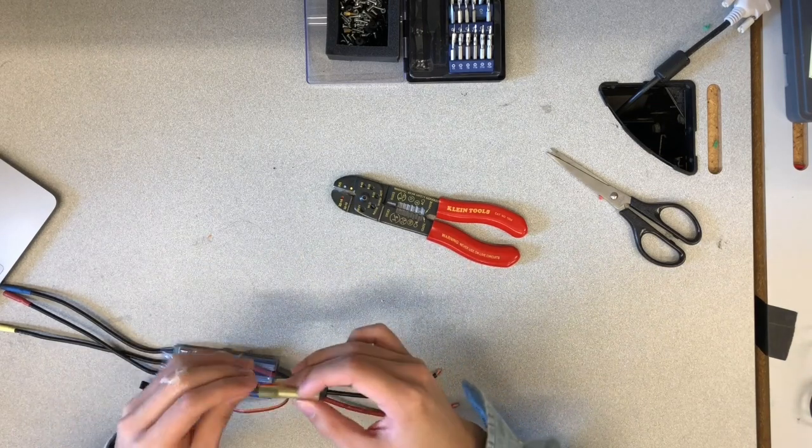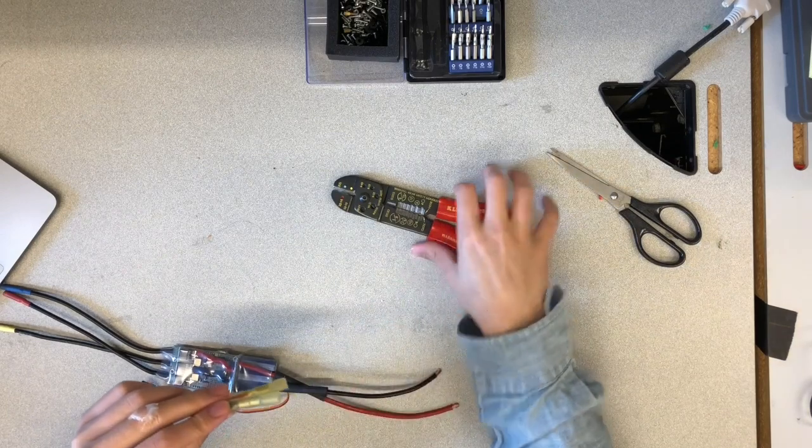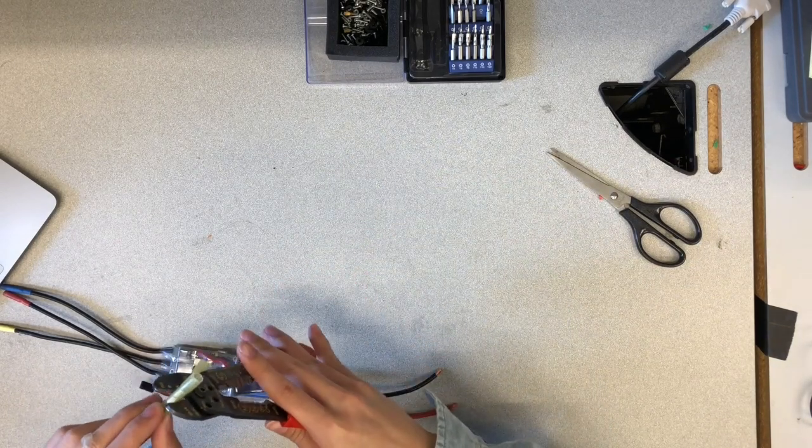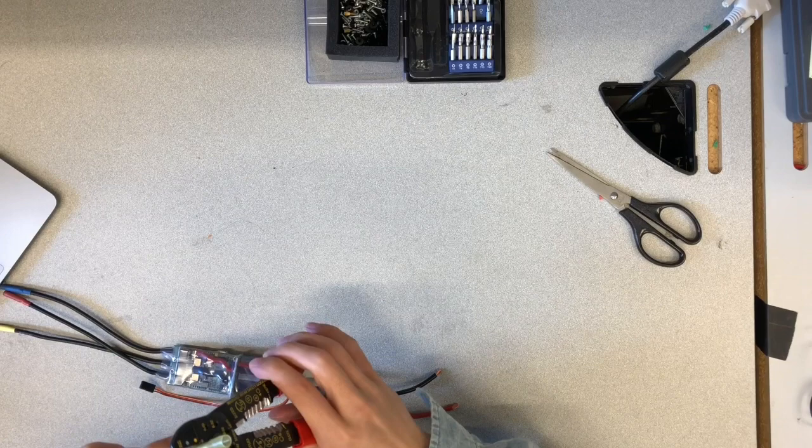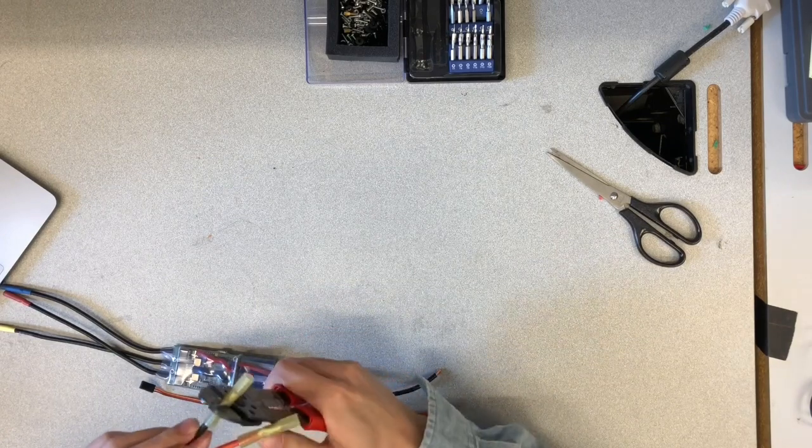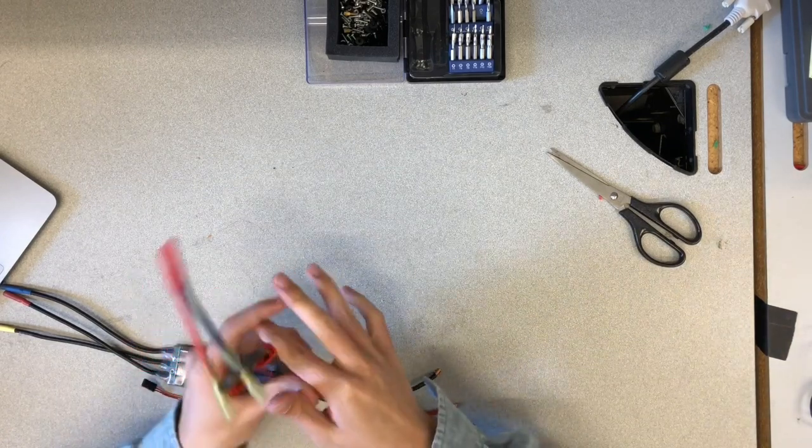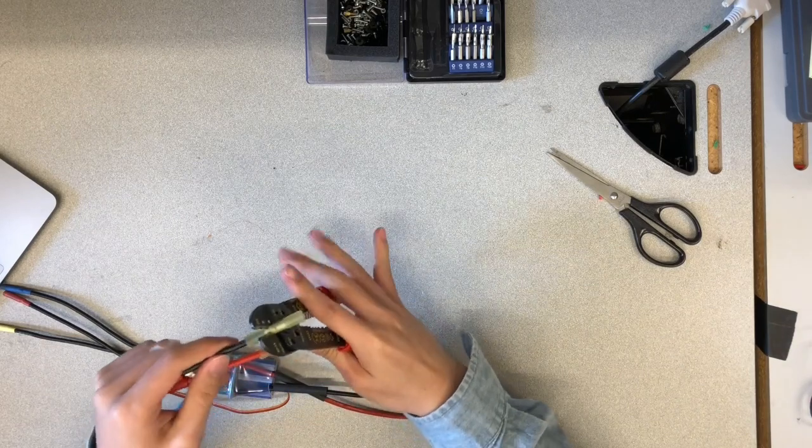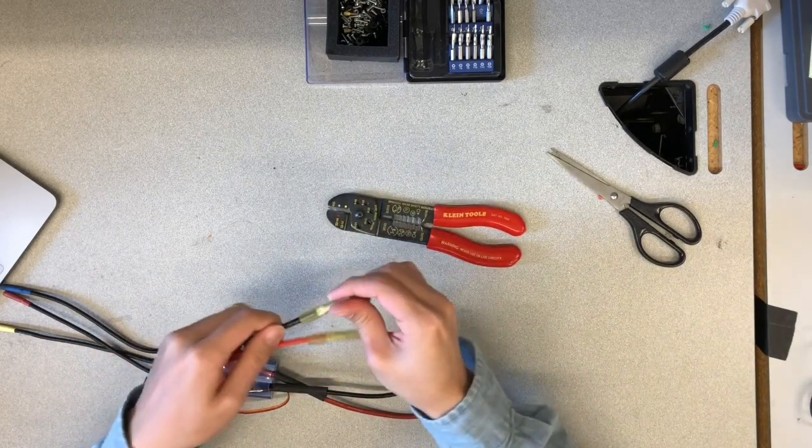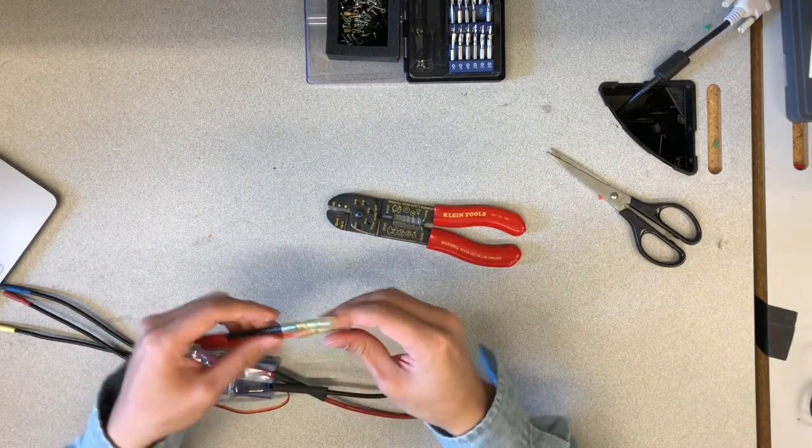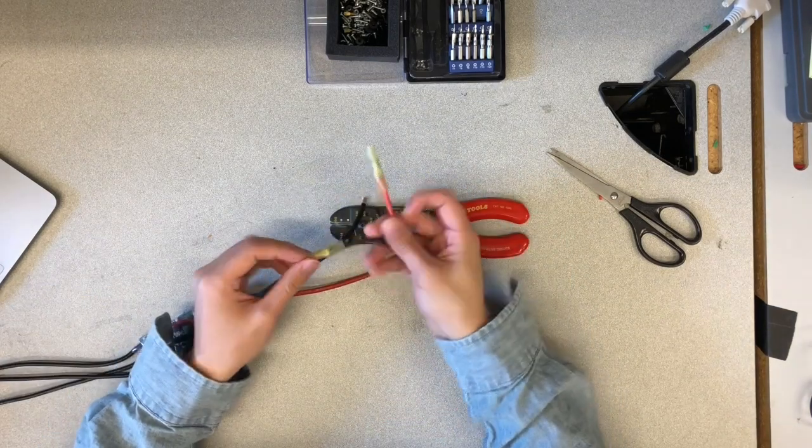If tugging causes the connection to slip or disconnect, go back and redo the process again. Be careful, each time you crimp must be secure and hard or else you will waste a lot of solderless heat shrinks.